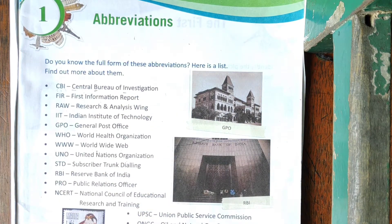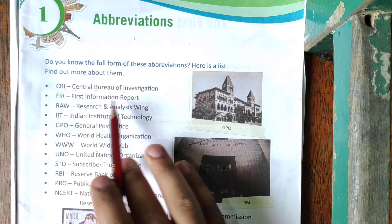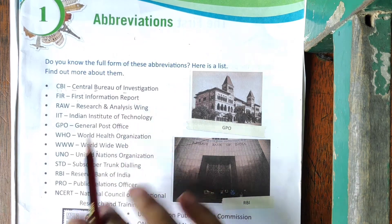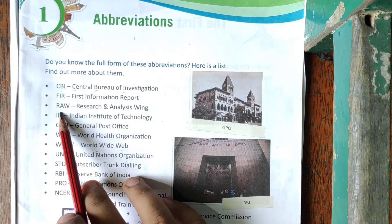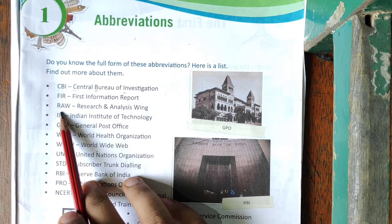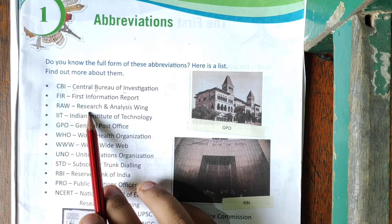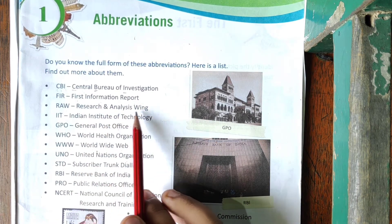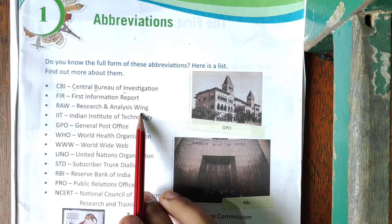Then we have FIR — First Information Report. Then we have RAW — Research and Analysis Wing.